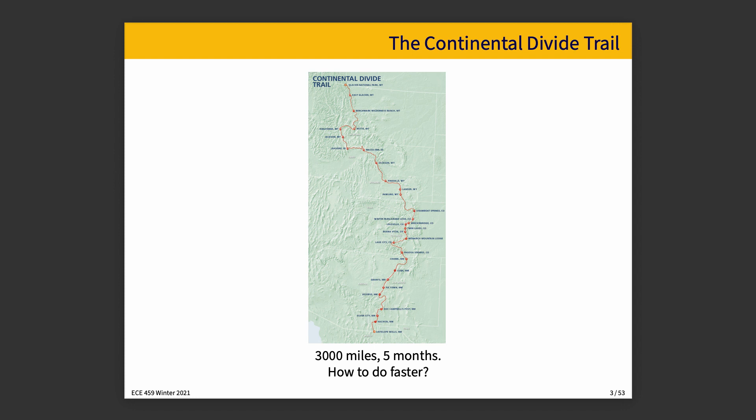Its discovery was apparently a big deal for explorers Lewis and Clark as they moved west to find the Pacific Ocean. The real focus is that there is a trail, estimated at about 3,000 miles — that's 5,000 kilometers — and it takes about five months to travel it. You might ask yourself, how do I do it faster?